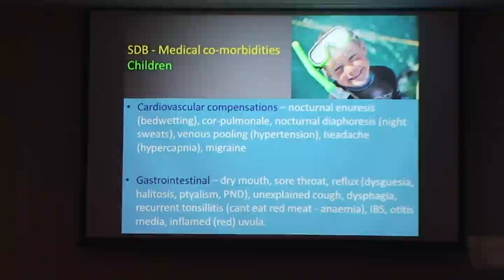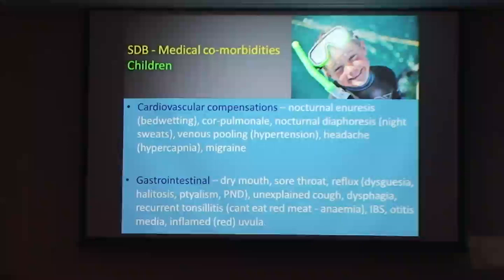Depending on the length of the soft palate determines whether we get a post-nasal drip or we get ptyalism. If we've got a long soft palate, the fumes are going to go straight up the back of the nose. The nose is going to react and make secretions to wall it off. If we've got a small soft palate, the fumes come into the mouth and the mouth doesn't like it, so we make more saliva to get rid of that — and that's ptyalism.